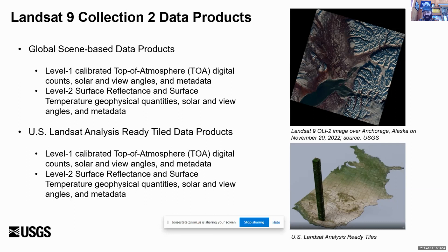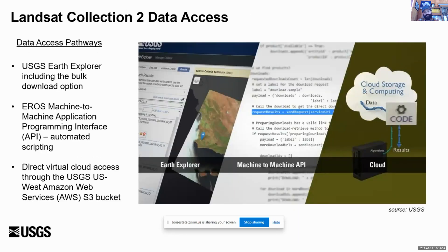We also produce US Landsat Analysis Ready Data — a tile data product over CONUS, Alaska, and Hawaii. This is the same data produced at the scene level but in an equal-area projection, so you can do systematic continental analysis without dealing with geometry differences across UTM zones. This is where we're headed in the future for seamless global data, but we're not quite there yet — Landsat ARD is our pathfinder. We still provide legacy access through Earth Explorer with bulk download, a machine-to-machine API for automated scripting, and data is available directly in the USGS West Amazon Web Services S3 bucket for direct cloud access.